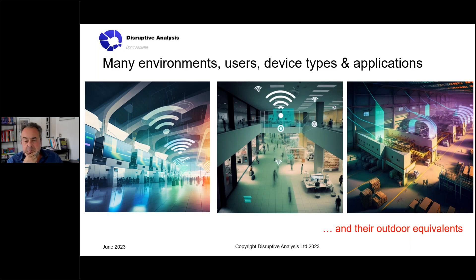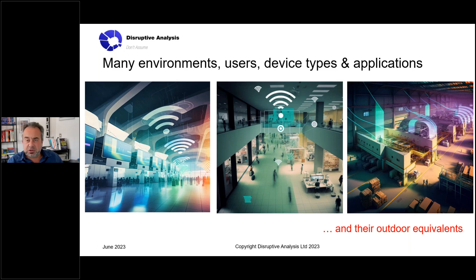A lot of enterprise environments are indoors or indoor-outdoor campus environments, which bring additional challenges for wireless connectivity — particularly delivering public network services into a private enterprise setting. While there are ways to provide good indoor coverage using small cells and distributed antenna systems, that's not ideal for all enterprise applications, which is why we're seeing more interest in private networks and later versions of Wi-Fi. Wi-Fi 6 and 7 have a huge role in some of these verticals.